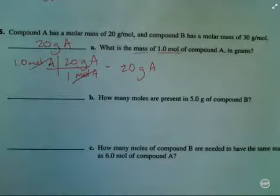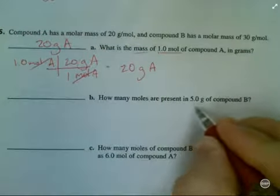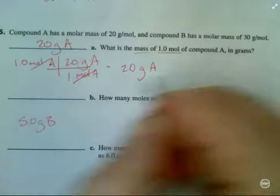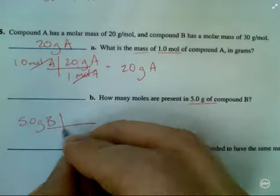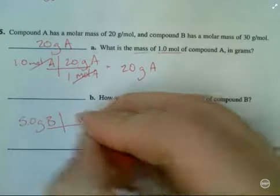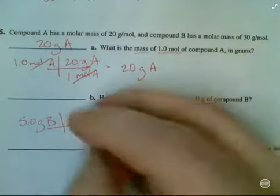Part B: How many moles are present in 5 grams of compound B? So now we're doing a similar conversion, just going the opposite way. Instead of going from moles to grams, we're going from grams to moles. So we're going to start with what the question gave us, 5 grams of compound B. Set up our conversion factor: grams B versus moles of B. In one mole, we have 30 grams.